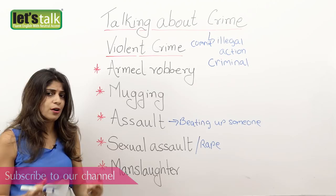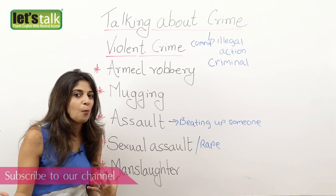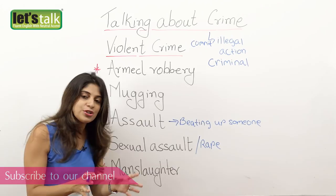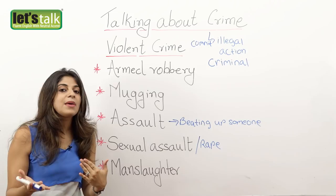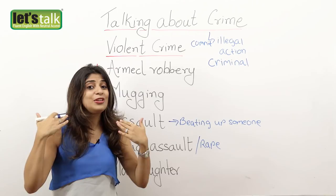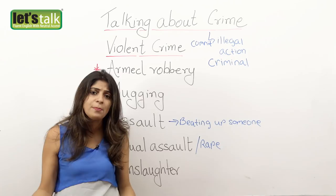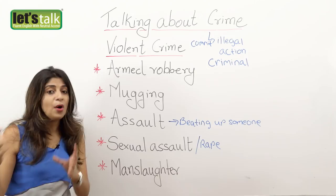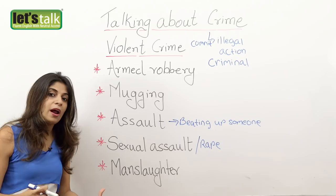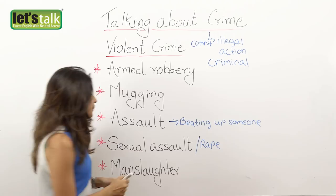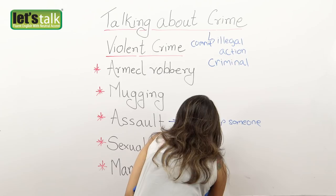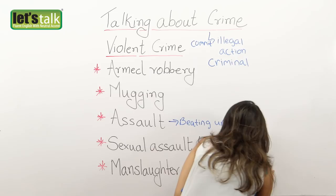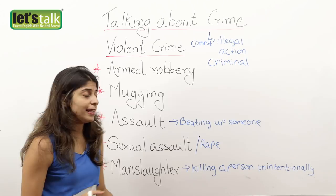The next one is manslaughter. Manslaughter is when a person kills someone but did not intend to kill that person. So it is a murder, but it is an unintentional murder. Maybe someone was trying to rob or attack you, and you wanted to save yourself, so you used some kind of weapon to kill that person — that is manslaughter. It is not considered by the law as bad as murder. It is still a crime; however, you did not intend to kill that person. Killing a person unintentionally is manslaughter.